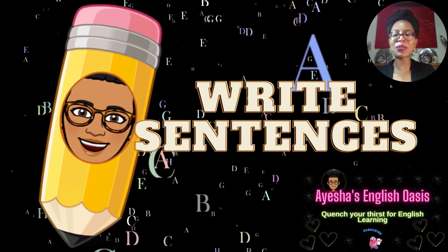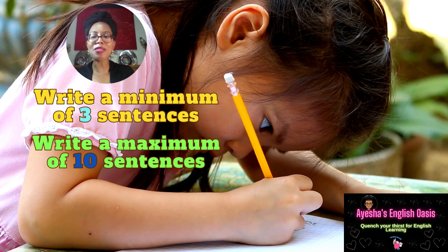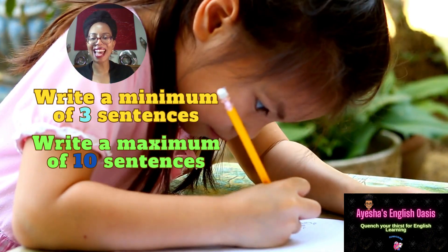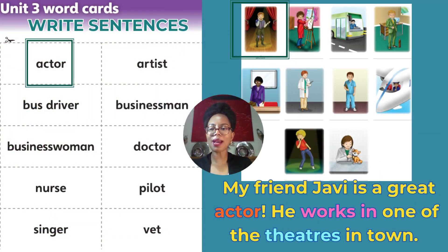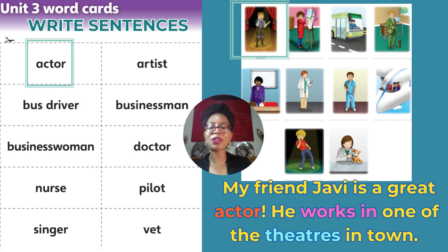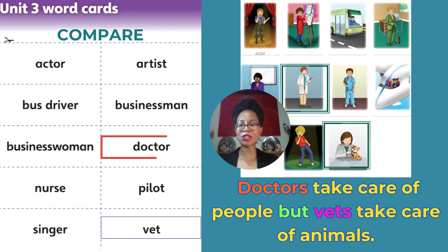Finally, we're going to use the words we've just practiced to write sentences. Write a minimum of three sentences or a maximum of ten sentences. Here are the words to help you. Listen to my example. My friend Javi is a great actor. He works in one of the theatres in town. Notice that I've used the word actor, and here you can see a picture of an actor.